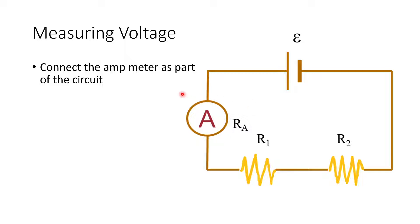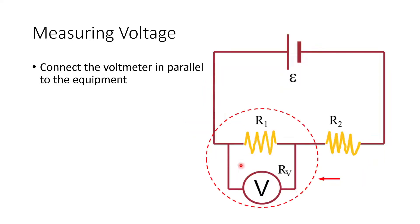An ammeter needs to be connected in series, in contrast to the voltmeter. If you connect in series, you can see that the current would flow through the ammeter itself — that's how you read the current. In contrast, if you measure the voltage, you need to connect it in parallel.